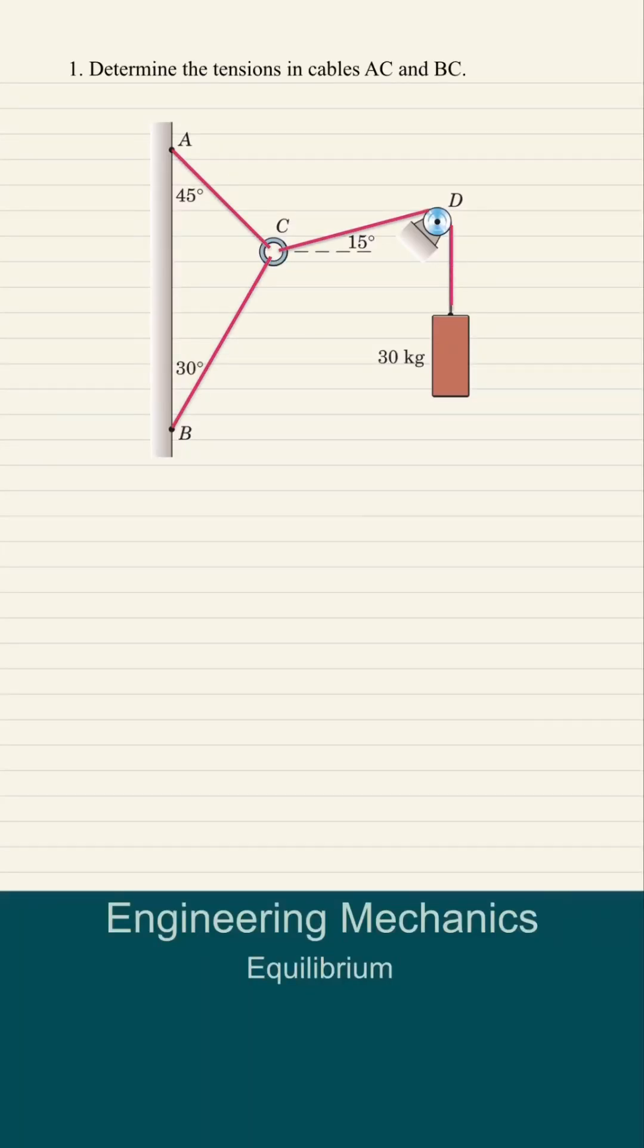Three cables are joined at the junction ring C. Determine the tensions in cables AC and BC caused by the weight of the 30kg cylinder.